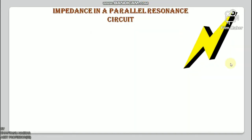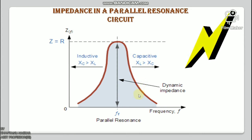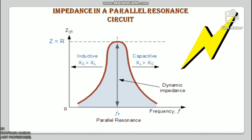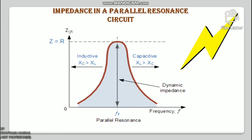If the parallel circuit impedance is at maximum at resonance, then the circuit admittance must be at its minimum. One characteristic of a parallel resonance circuit is that admittance is very low, limiting the circuit current — unlike the series resonance circuit. The resistor in a parallel resonance circuit has a damping effect on the circuit bandwidth, making the circuit less selective.